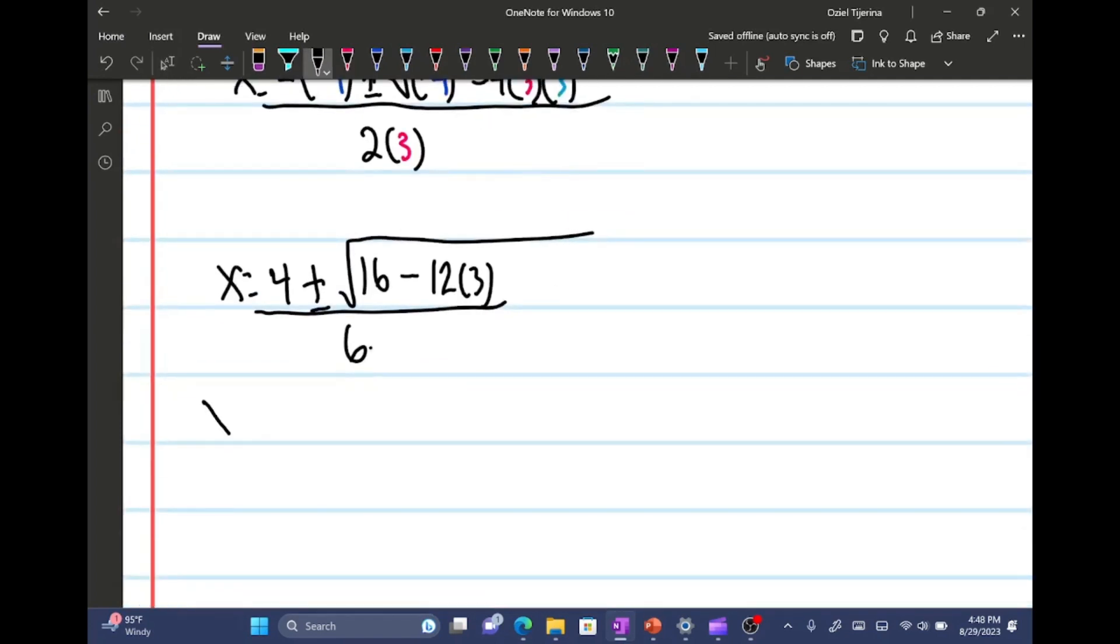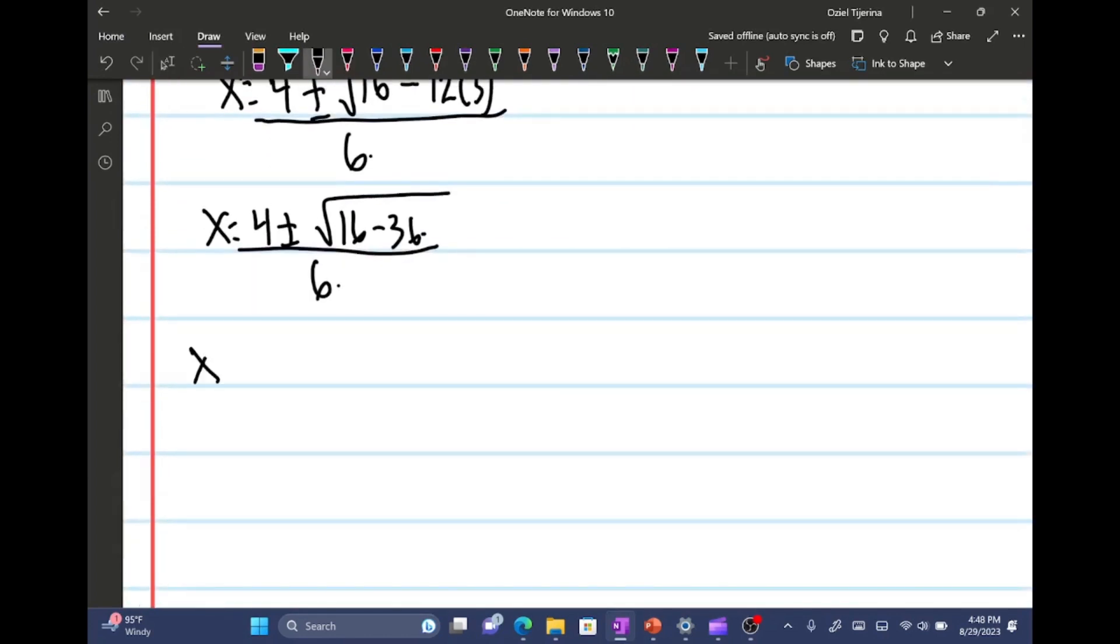So then this will be x equals 4 plus or minus the square root of 16 minus 36 all over 6. And then here we have x equals 4 plus or minus, and 16 minus 36 is negative 20. So I'm gonna put negative 20 here all over 6.